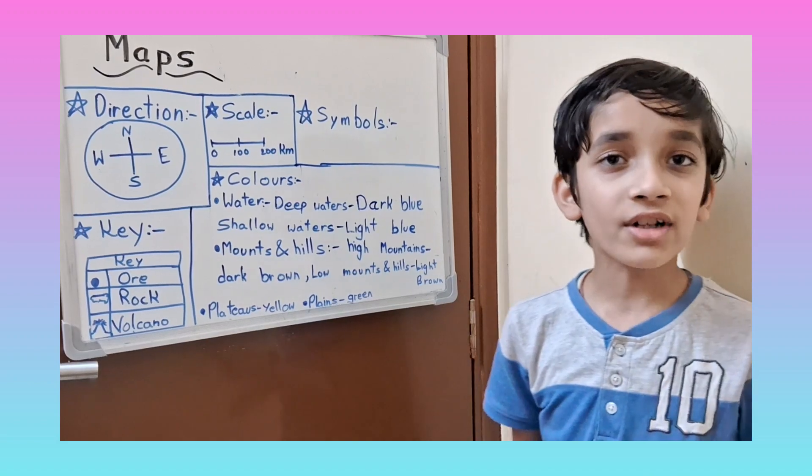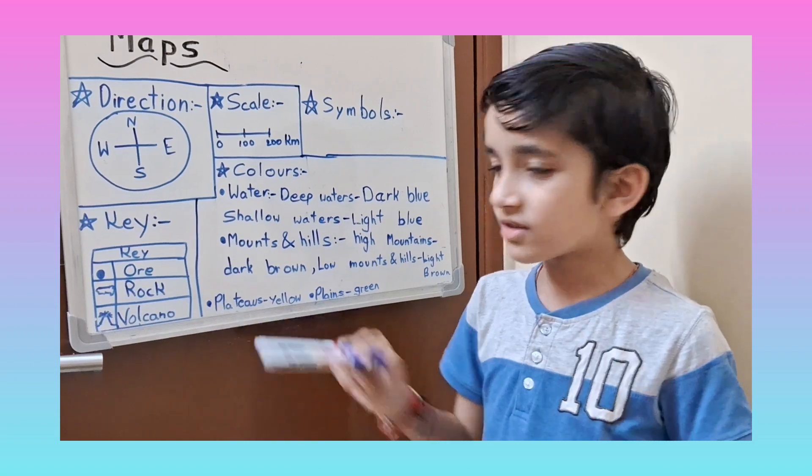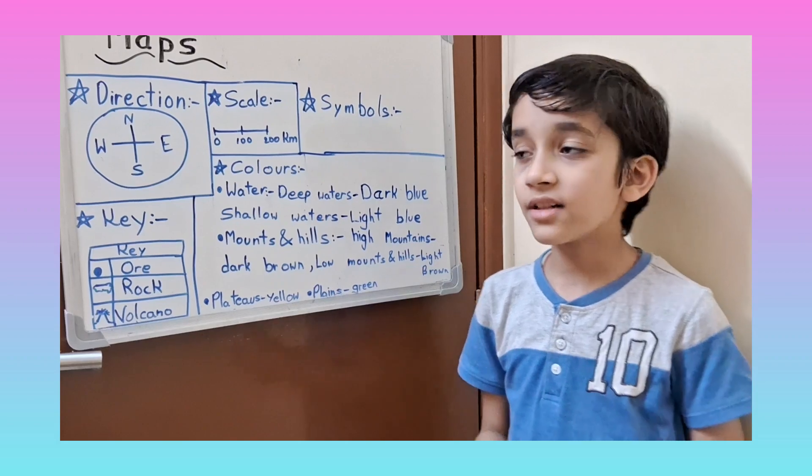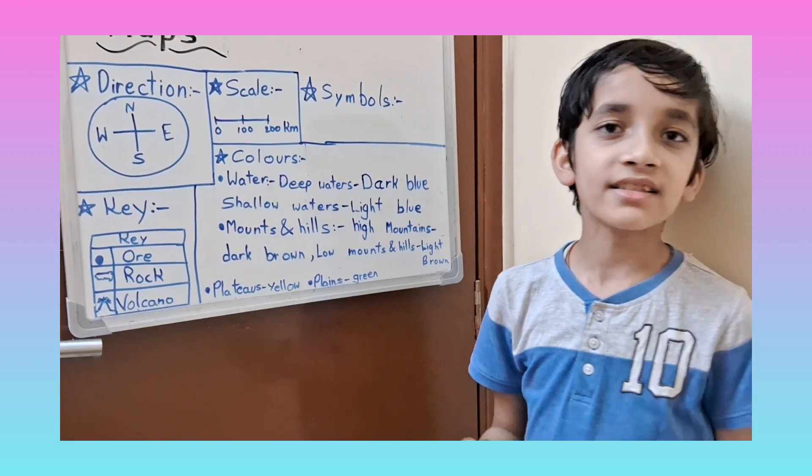Next is rocky places, very rocky places. So here this symbol will be drawn for rocky places. Now the places where volcanoes are. So that's this volcano symbol drawn.